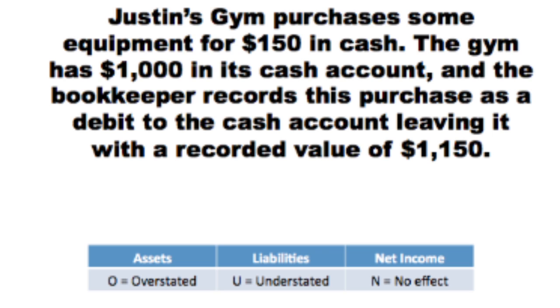Pause this video and try showing how this transaction will either overstate or understate the different parts of the balance sheet. Answer this question in the format shown on the screen, using an O for overstated, a U for understated, and an N for no effect. In our questions, and also in your class, your questions won't look at individual accounts, but rather assets, liabilities, and net income as a whole.